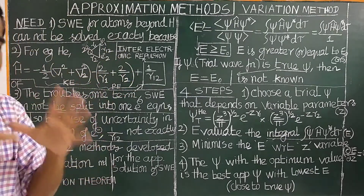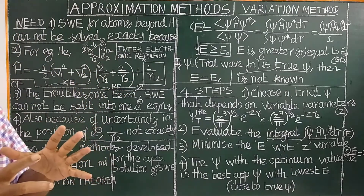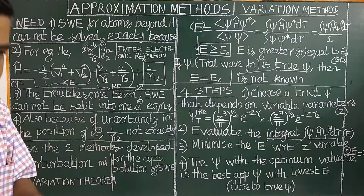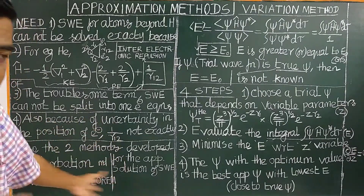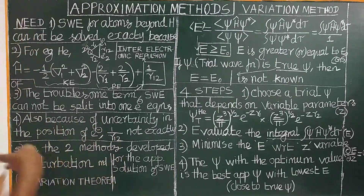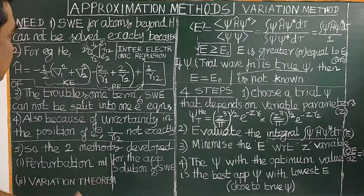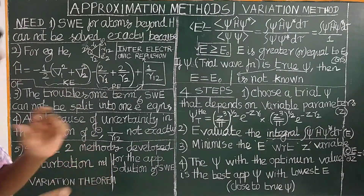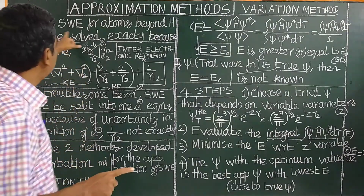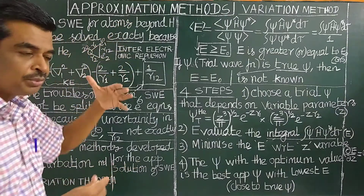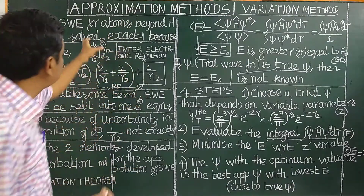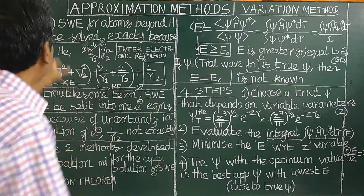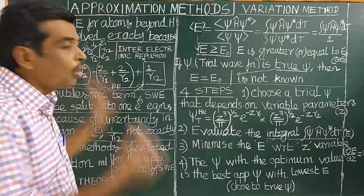The Schrödinger wave equation can be exactly solved for hydrogen atom or hydrogen-like atoms, as we have seen in the previous class. Whereas on the other hand, the Schrödinger wave equation for multi-electron atoms — that is beyond hydrogen atom — cannot be solved exactly.